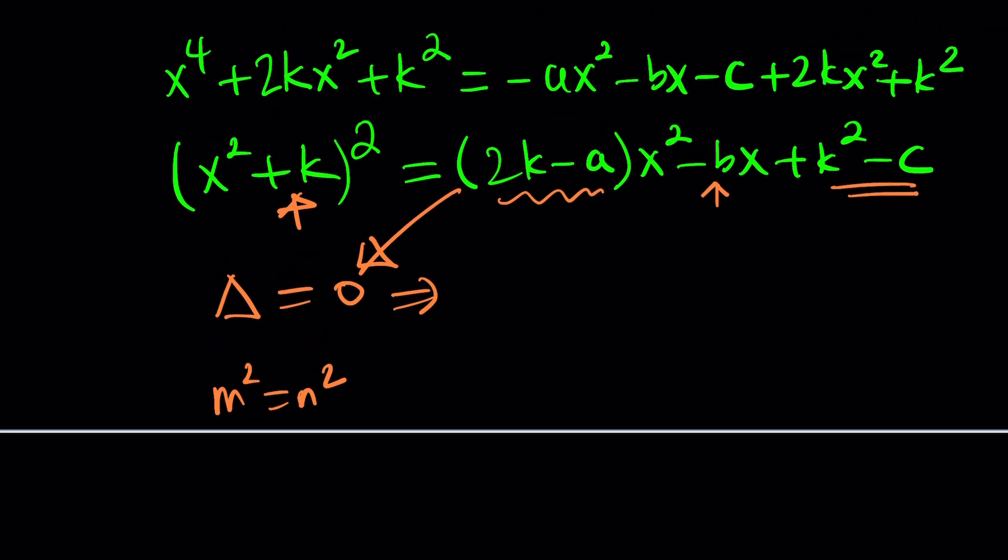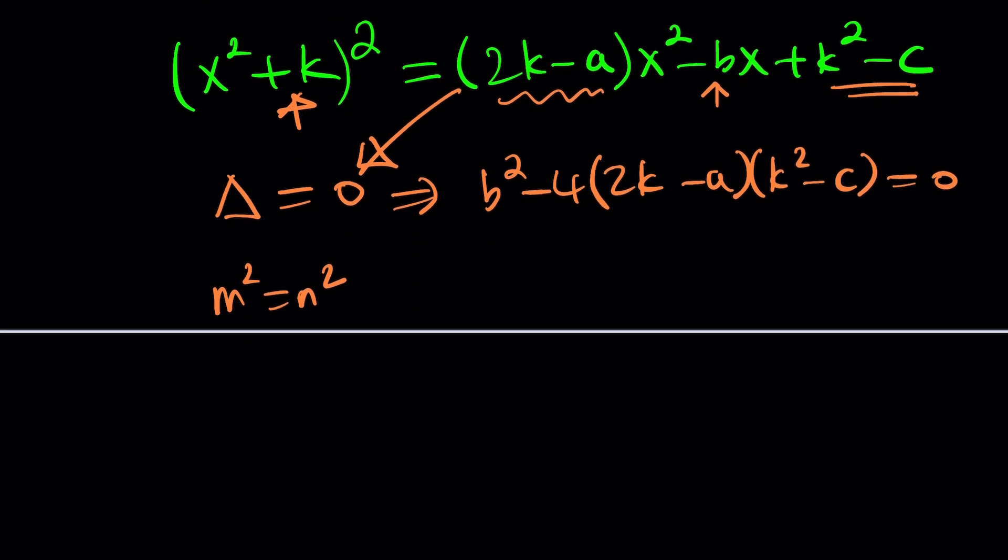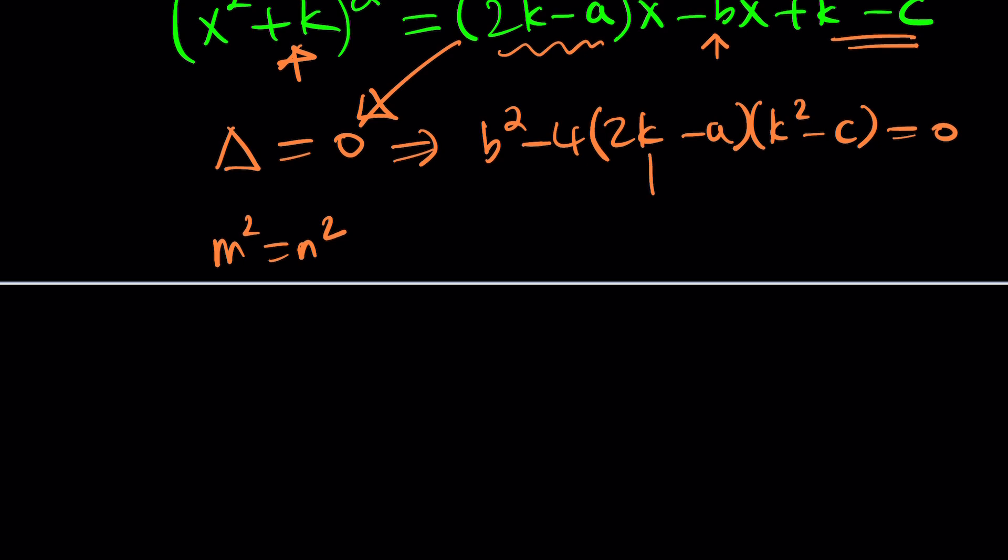How do you write the discriminant from here? b squared minus 4ac. And you want it to be 0. Now notice that by expanding this, you're going to get a cubic in k, which can be solved with the cubic formula. Again, you may need to do some reduction of the power or getting rid of some of the terms. But that's the method. I'm going to leave it at that, because this is super painful.